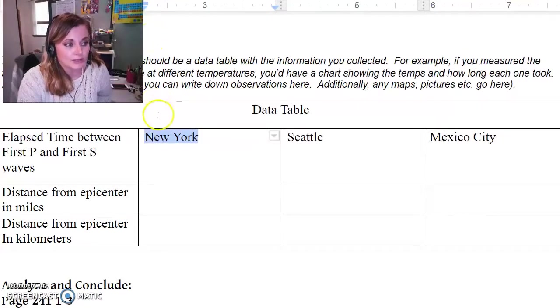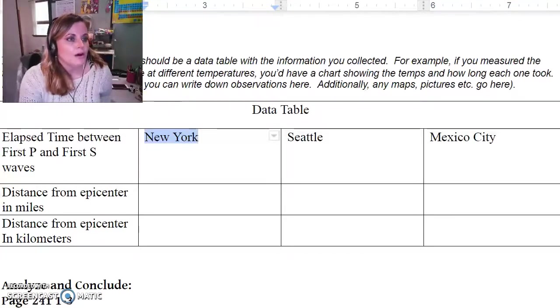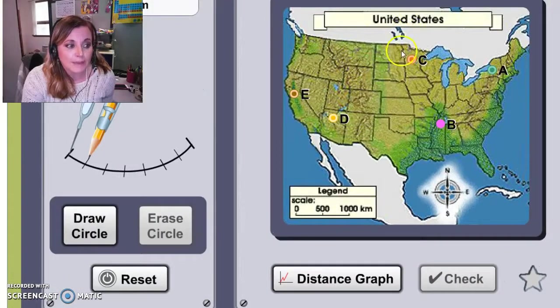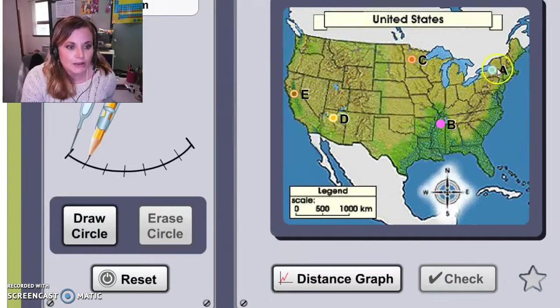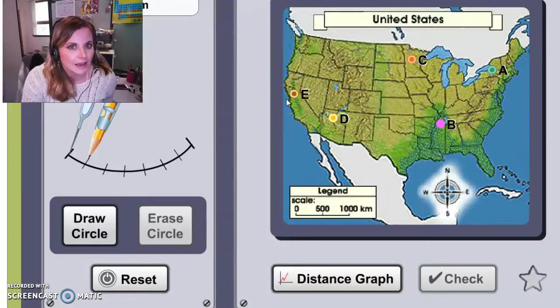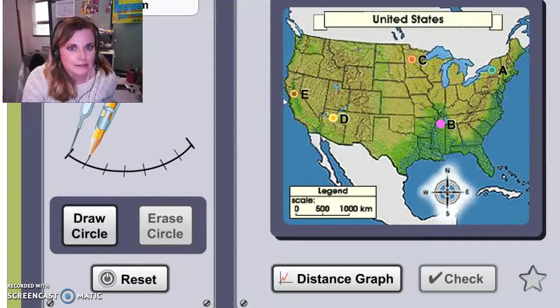You will not use these three cities. Instead, you will alter this and you will choose three locations on this map: Location A, B, C, D, and E. And you can just call them A, B, C, D, and E. You don't have to guess like where they are.